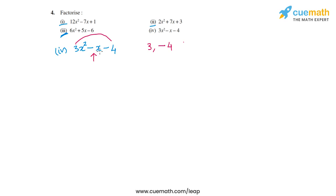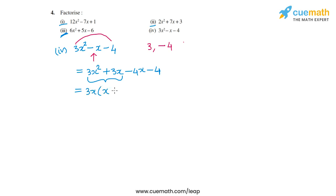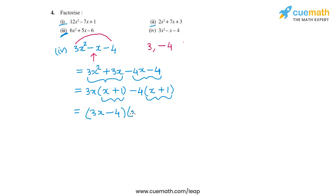So I split minus x as 3x minus 4x, giving 3x² plus 3x minus 4x minus 4. From the first pair I take out 3x common, leaving x plus 1. From the second pair I take out minus 4 common, giving minus 4 times x plus 1. Taking out x plus 1 common, I am left with 3x minus 4 times x plus 1. This is the factored form of the fourth polynomial, completing question number 4.